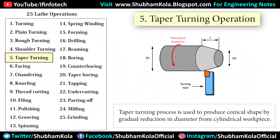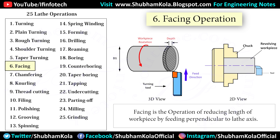Taper turning is a process used to produce a conical shape by gradual reduction in diameter from a cylindrical workpiece. Facing is the operation of reducing the length of a workpiece by feeding perpendicular to the lathe axis.